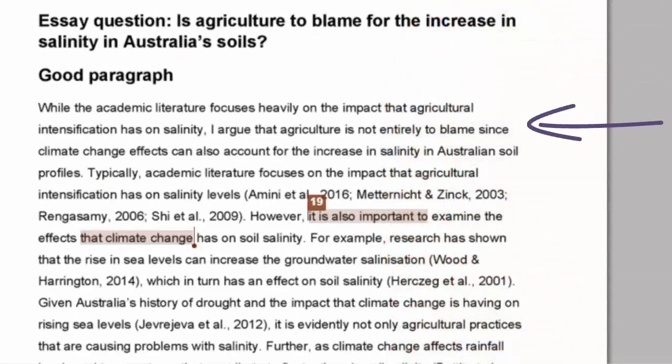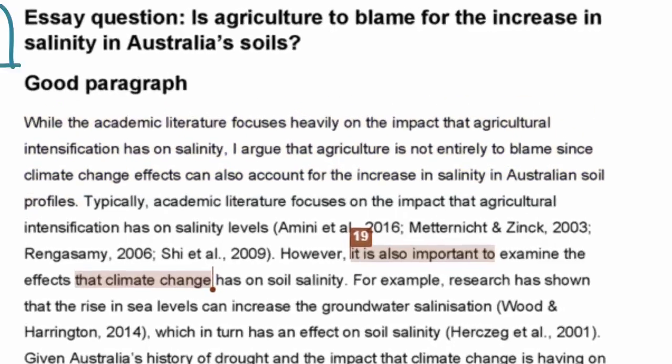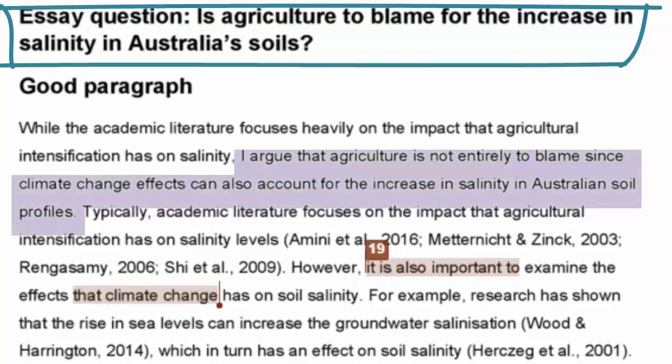In this example, you can see how the topic sentence is now the student's own words, as it states: While the academic literature focuses heavily on the impact that agricultural intensification has on salinity, I argue that agriculture is not entirely to blame, since climate change effects can also account for the increase in salinity in Australian soil profiles. This sentence answers the question very clearly. It tells us about the student's argument that agriculture is not the only factor to blame for salinity, and the paragraph's main topic, the effects climate change has on salinity.